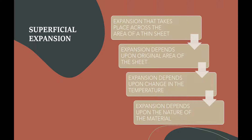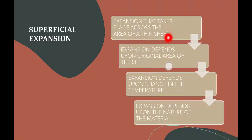When a thin rectangular metal sheet is heated, its length as well as breadth increases. In general, on heating a metallic plate or a sheet, its area increases. The change in the surface area of a sheet on heating is known as superficial expansion. This expansion depends upon the original area of the sheet, change in temperature, and nature of the material.